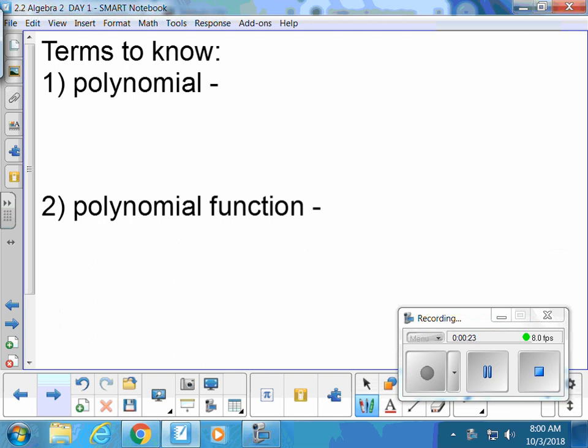All right, terms to know: polynomial. Polynomial means many terms, so basically more than one monomial. I'll just write 'many terms.' You can have a monomial which is one term, a binomial which is two terms, a trinomial which is three terms. We've already talked about all those words, but polynomial just means you have many terms. So a trinomial is a polynomial, and a binomial is a polynomial. Actually, the book says a monomial is a polynomial as well.